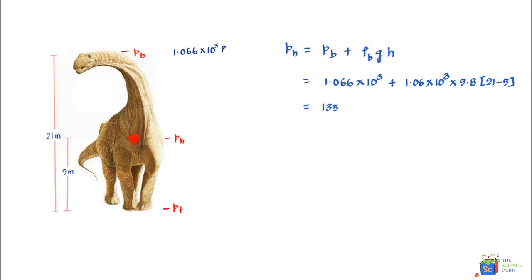Solving this gives 135.3 × 10³ pascals. So the heart needs to produce a pressure of 135.3 × 10³ pascals so that blood gets pumped up to the brain level and creates a pressure of 1.066 × 10³ pascals there.